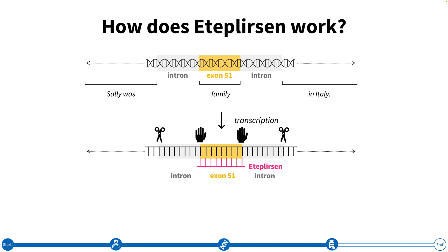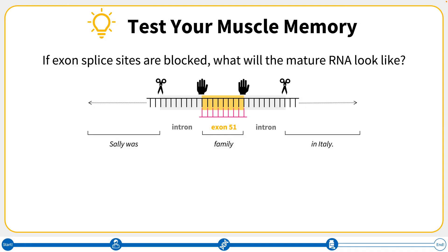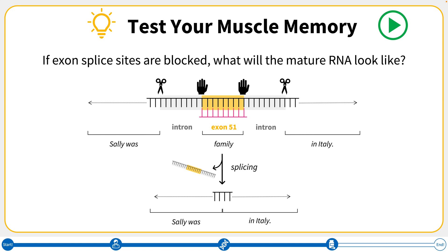Now let's test our muscle memory about the splicing process. If the splice sites around exon 51 are blocked, what do you think the mature RNA will look like? Pause the video here to think about this question. Remember that splicing cuts the introns out of the pre-RNA. So if the splice sites on either side of exon 51 are blocked, the cell won't know where the introns end and the exon begins. This means that all of exon 51 will be removed along with the introns on either side. While the mature RNA is shorter, the sentence makes sense again — 'Sally was in Italy' — so the transcript can be translated into a shortened form of dystrophin.